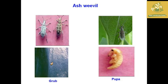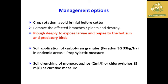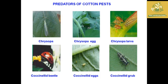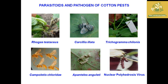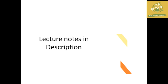Management for ash weevil includes crop rotation but avoiding brinjal cropping, deep plowing to expose larvae and pupae to the hot sun, encouraging predatory birds, soil application of carbofuran granules in endemic areas, and soil drenching of monocrotophos or chlorpyrifos as a curative measure. Pictures of some predators of cotton pests are also provided.